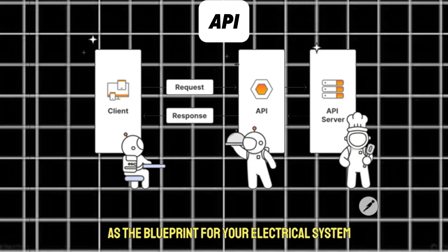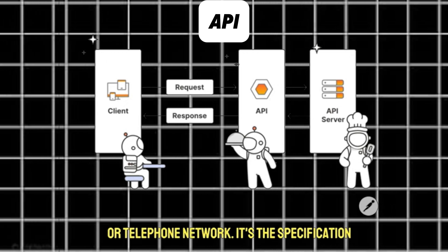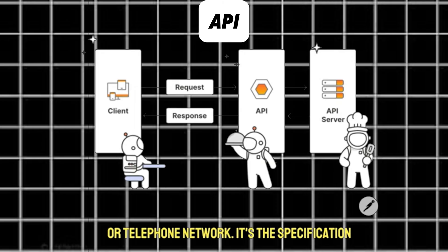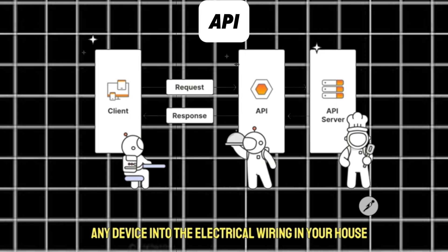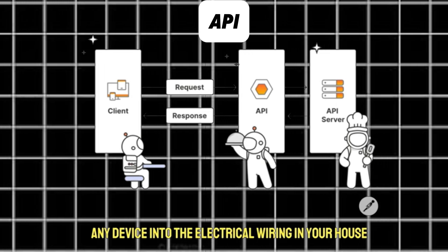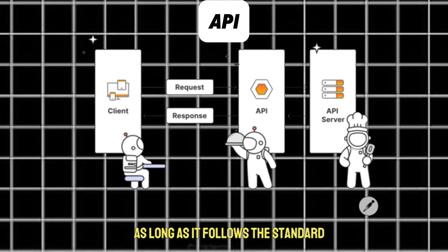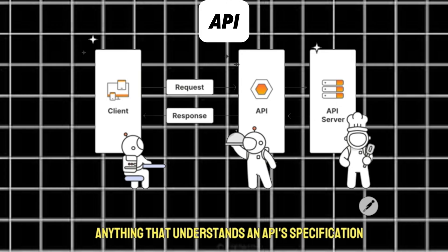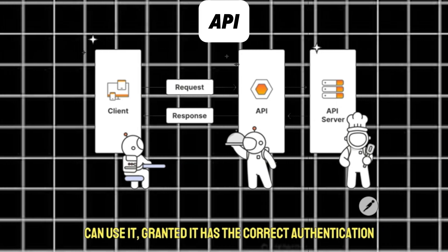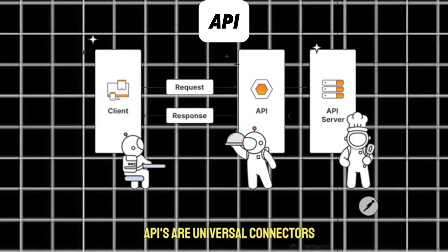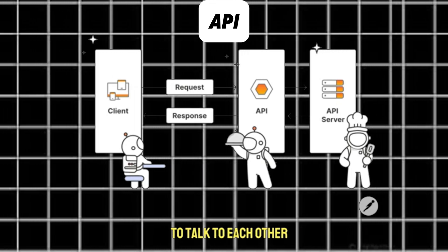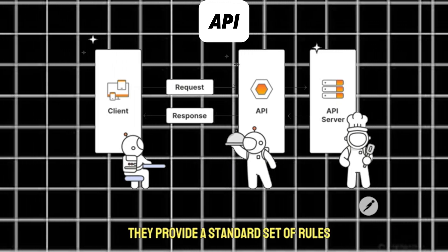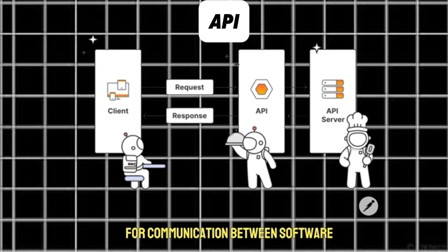Imagine an API as the blueprint for your electrical system or telephone network. It's the specification, the set of rules and protocols that tell software how to communicate. Just like you can plug any device into the electrical wiring in your house as long as it follows the standard, anything that understands an API's specification can use it, granted it has the correct authentication. APIs are universal connectors enabling different systems and services to talk to each other, providing a standard set of rules for communication between software.